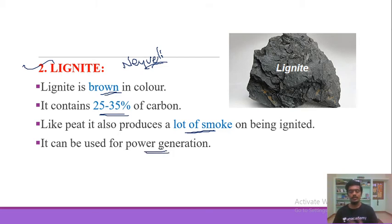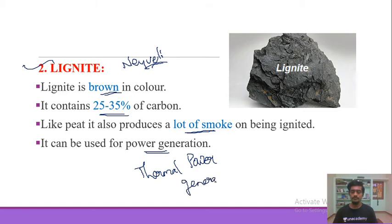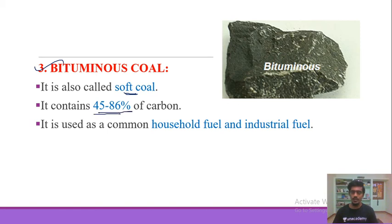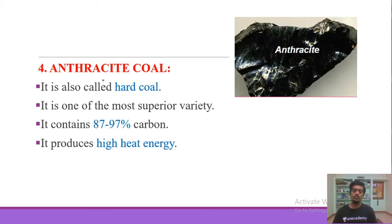The next type is lignite, also called brown coal. It contains 25–35% carbon and produces a lot of smoke. Lignite is used in thermal power stations. The next stage is bituminous coal, which is softer and used as household fuel and industrial fuel.